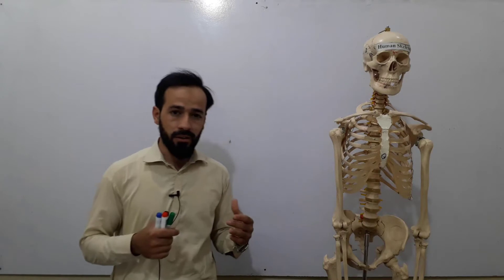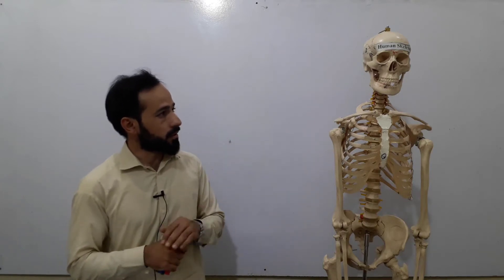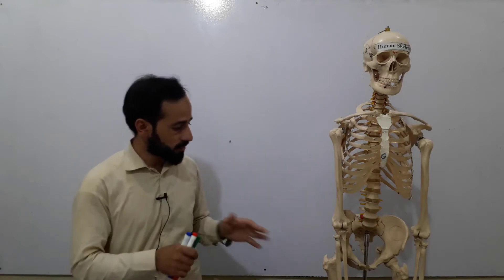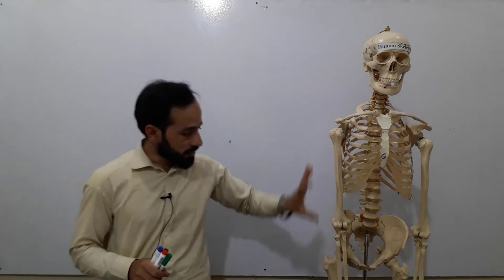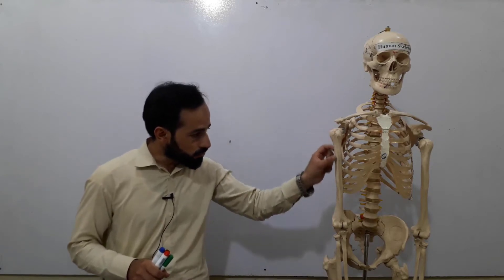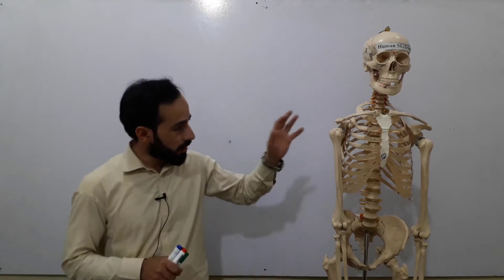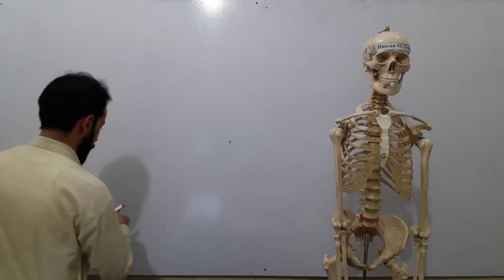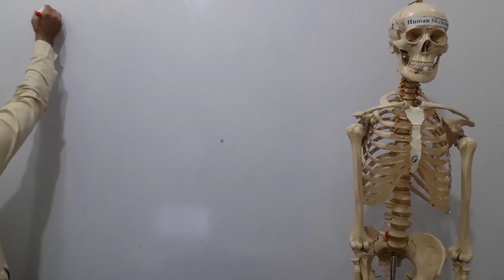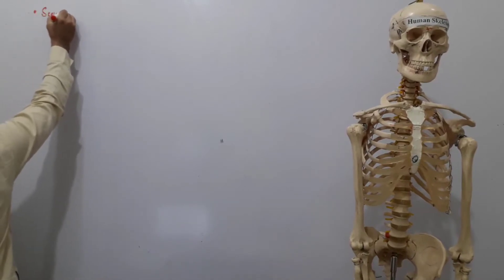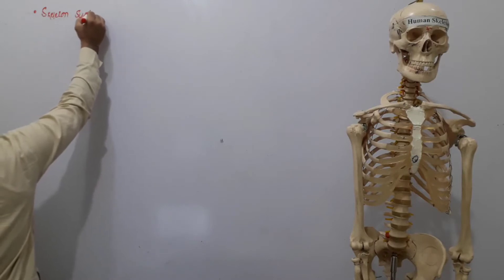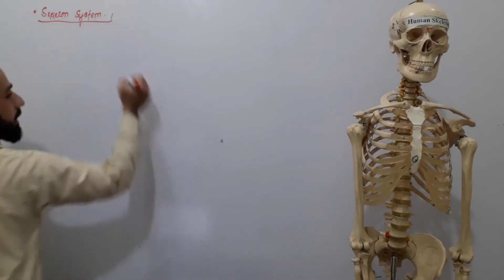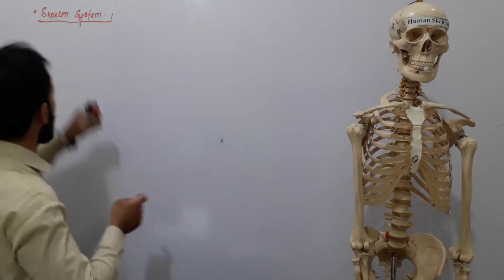We are starting lectures on the human skeleton. First, we should know what the skeleton is, then we will divide the human skeleton into its different shapes. We will discuss each and every bone and all the important markings present on every bone. Let's begin our lecture — first, let us define the skeletal system.